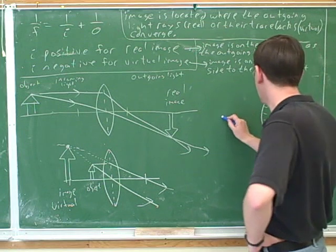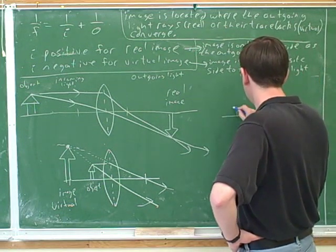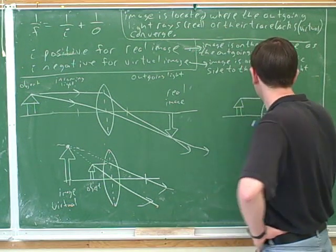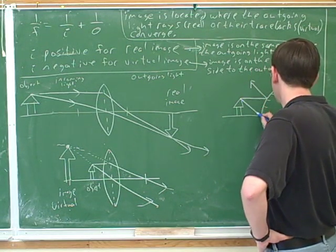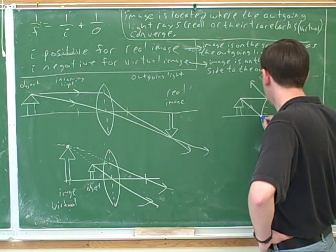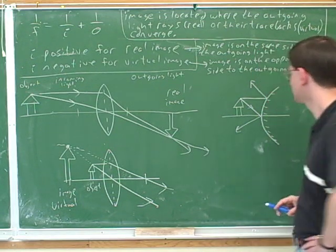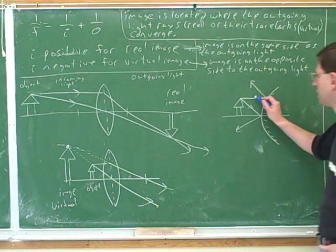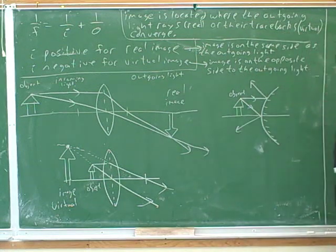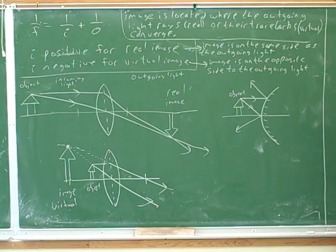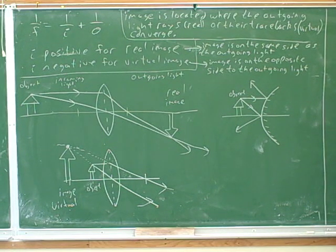Starting with this picture, I've got this object. Notice that I've shifted from lenses to mirrors. Does it look like we're going to end up with a real or a virtual image here? Take your time and draw this, but when you're ready, does it look like we're going to end up with a real or a virtual image?